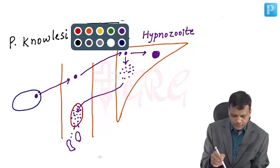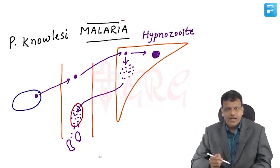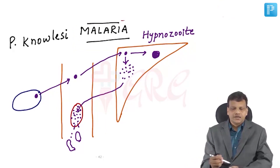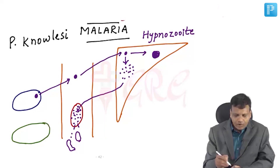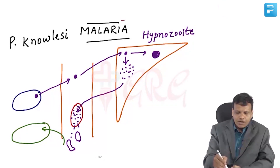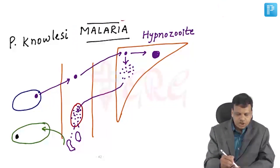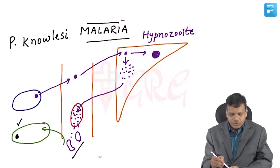In malaria we have two hosts: the definitive host, where the sexual cycle occurs, and the intermediate host, where the asexual cycle occurs. For the malarial parasite, humans are intermediate hosts — only the asexual cycle occurs here. When gametes need to fuse (sexual cycle), if the Anopheles mosquito bites again, it picks up the gametes, they fuse inside the mosquito to form new Plasmodium, and that mosquito is now ready to transmit malaria to another person. The gametes' only clinical importance is that they act as the source of transmission.